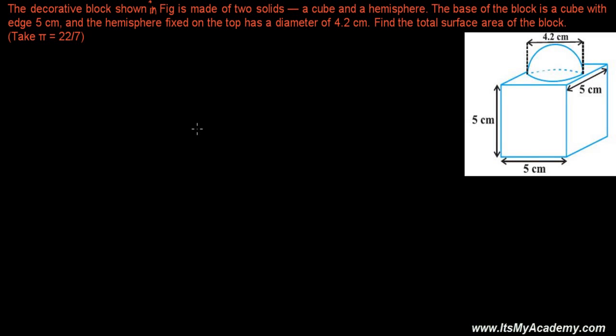Here I'm going to discuss the second question from the surface area of the combination of solids. Before solving problems of surface areas of combination of solids, you must learn all the formulas related to cube, cuboid, sphere, cylinder, and hemisphere — the curved surface area and total surface area. Learn the mensurational formulas first, and then you can solve these problems easily once you understand the concept.